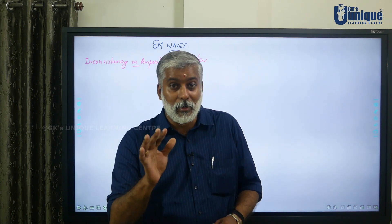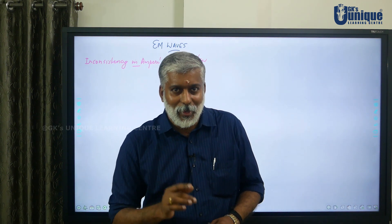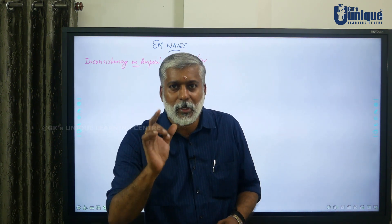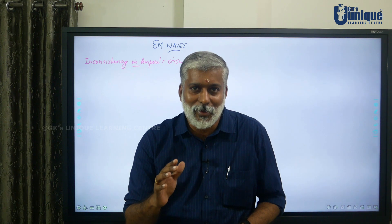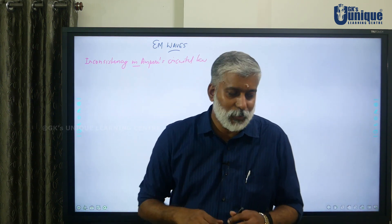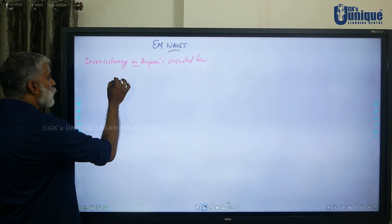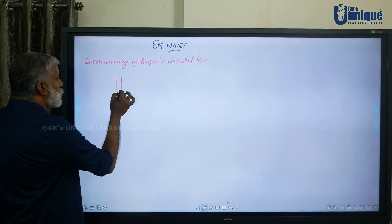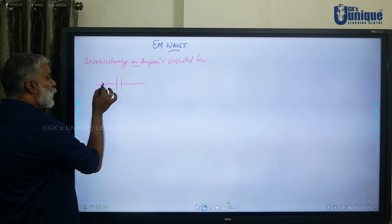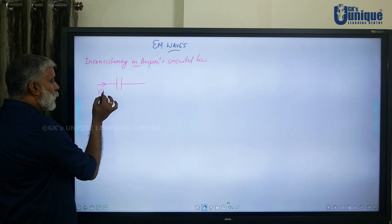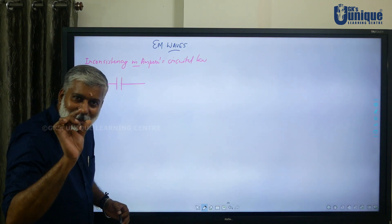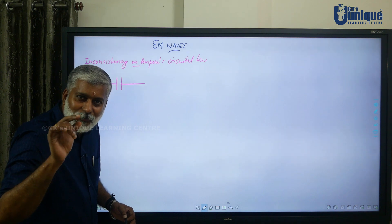What is the inconsistency in Ampere's Circuital Law? Let us check using a simple example. I am going to charge a capacitor — two plates — and I am sending a current through it. It is a time-dependent current, I(t), which is changing with respect to time.